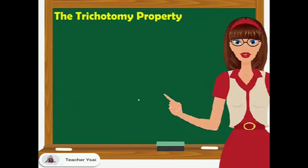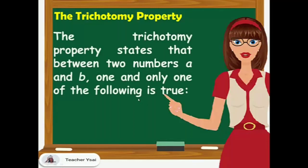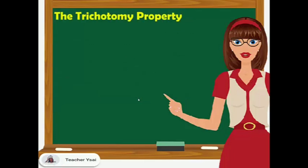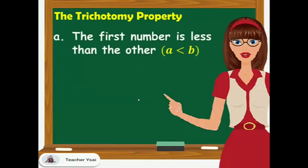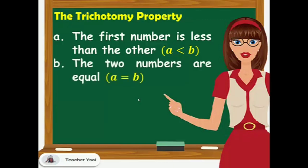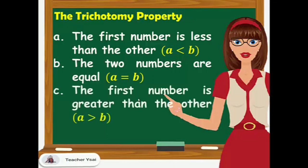So, we have the trichotomy property. The trichotomy property states that between two numbers A and B, one and only one of the following is true: first, the first number is less than the other, that is A is less than B; second, the two numbers are equal, that's A equals B; and third, the first number is greater than the other, that's A is greater than B.